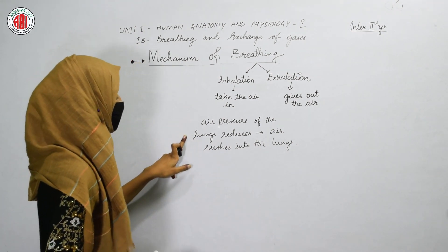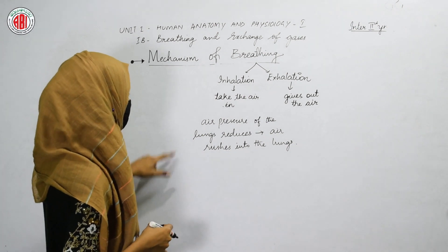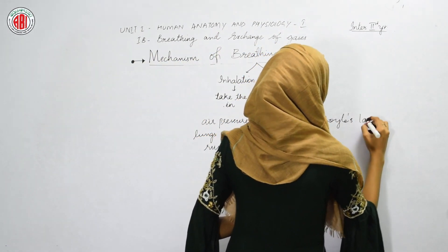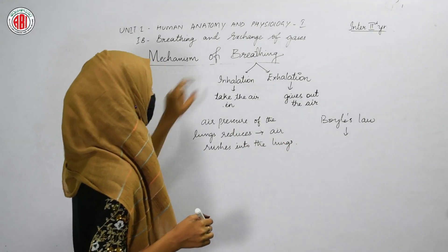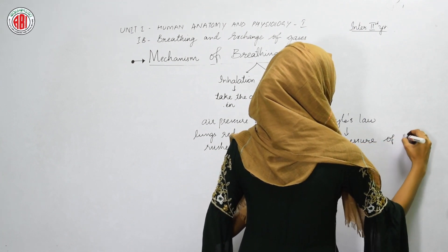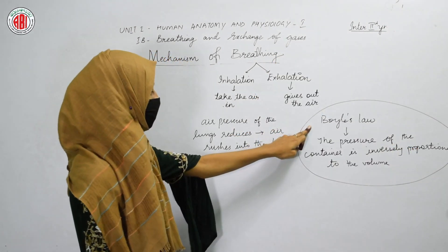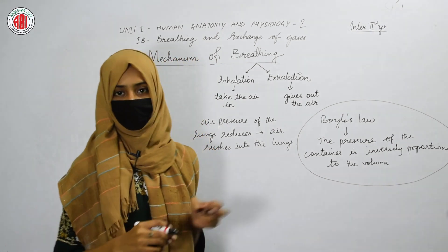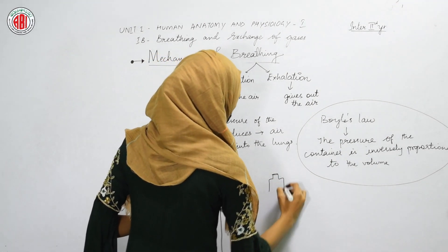Whenever the air pressure of the lungs reduces, the atmospheric air rushes into the lungs. How can we reduce the air pressure of the lungs? To understand this, we need to recall Boyle's Law. Boyle's Law states that the pressure of a container is inversely proportional to the volume. To understand this law, let us take one big container and one small container, each with 10 molecules of air.